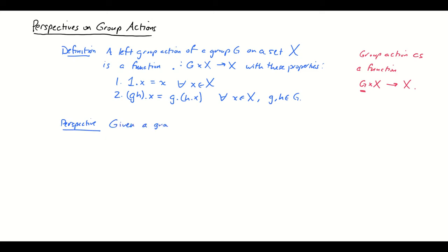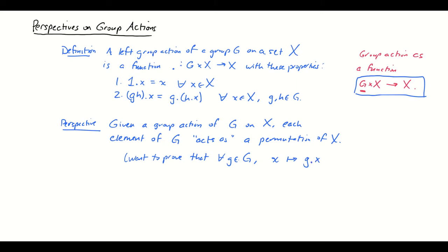So here's another perspective. Given a group action of G on X, each element of G acts as a permutation of X. Now we didn't prove that in the previous video, and if we just took any function from G cross X to X it wouldn't be a given that each group element actually permutes elements of X. So this is something that we might want to show. We want to prove that for every g in our group the function that maps x to g·x is a permutation of X, that is, a bijection from X to itself.